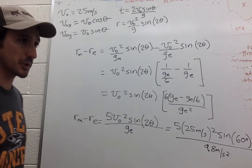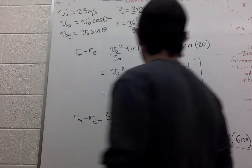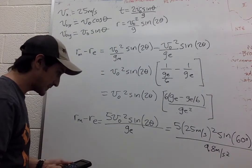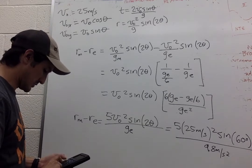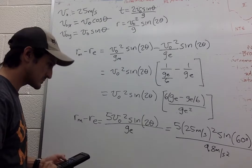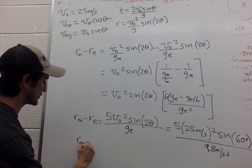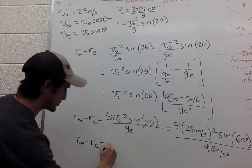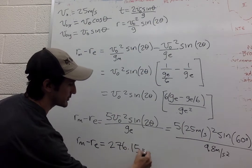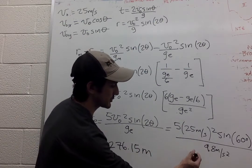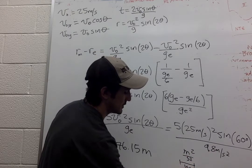So let me grab my calculator. I get that the difference in the ranges is 276.2 and 15 meters. This is meter squared. Second squared. This is meter and second squared.